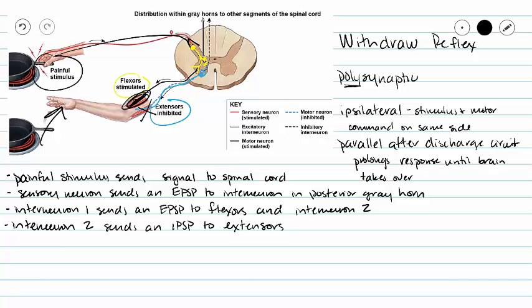So think about it. If we contracted our extensors at the same time as we contracted our flexors, our arm wouldn't move and we would be stuck on this painful stimulus.